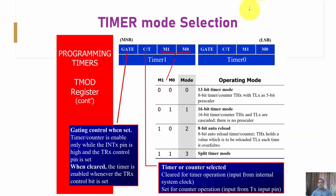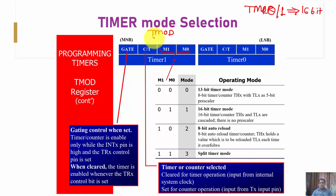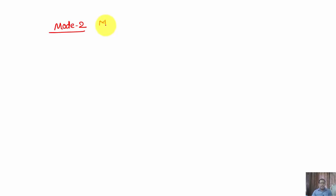Timer 0 and Timer 1 are both 16-bit registers, and to select the proper mode of operation the TMOD register is used. The TMOD register is basically an 8-bit register. Today we are going to discuss the 8-bit auto reload mode for the timer, which is Mode 2 operation — selected when the M1 bit is 1 and M0 bit is 0 from the TMOD register.